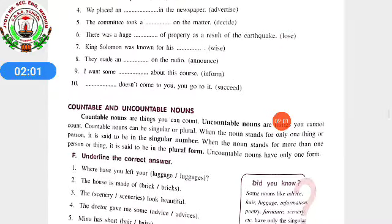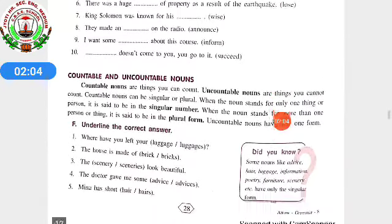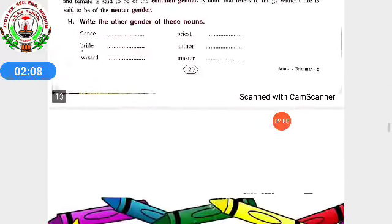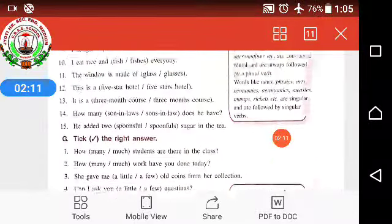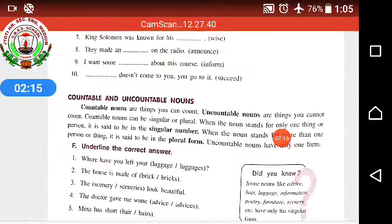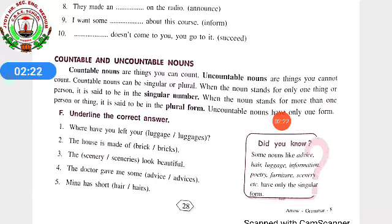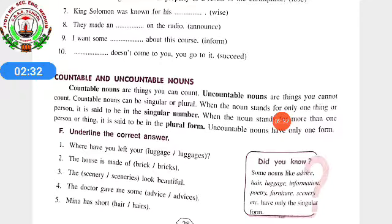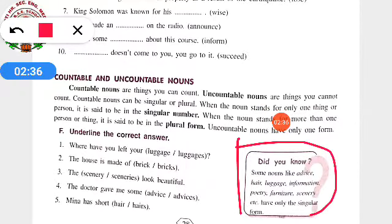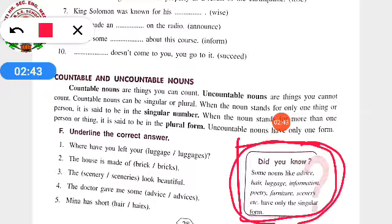Now we will start countable and uncountable nouns. Before reading this, I will show you something. Did you know: some nouns like advice, hair, luggage, information, poetry, furniture, scenery, etc. have only the singular form. This is an important thing to keep in mind, because many questions related to countable and uncountable nouns will involve these kinds of words, and if you remember this, you won't make any mistakes.